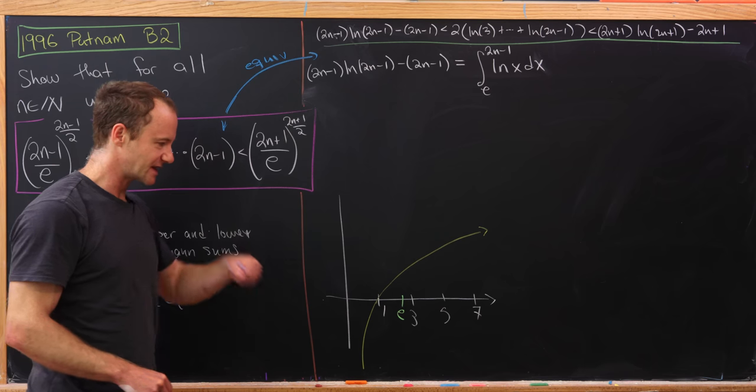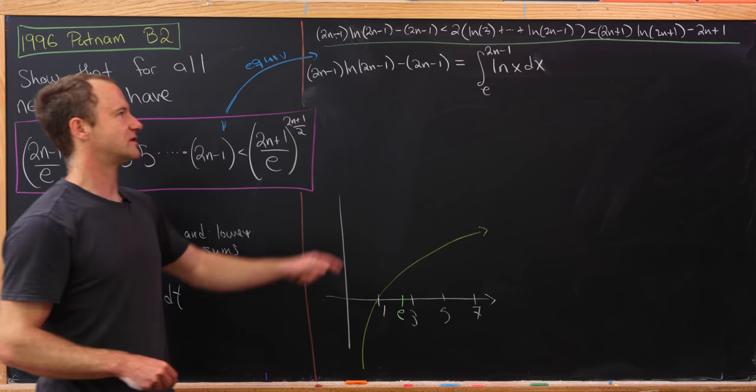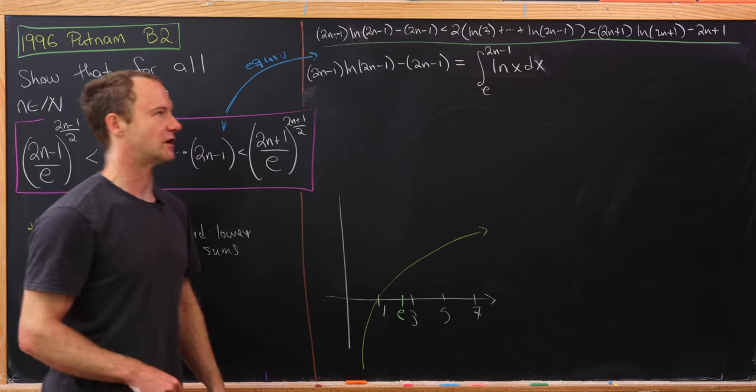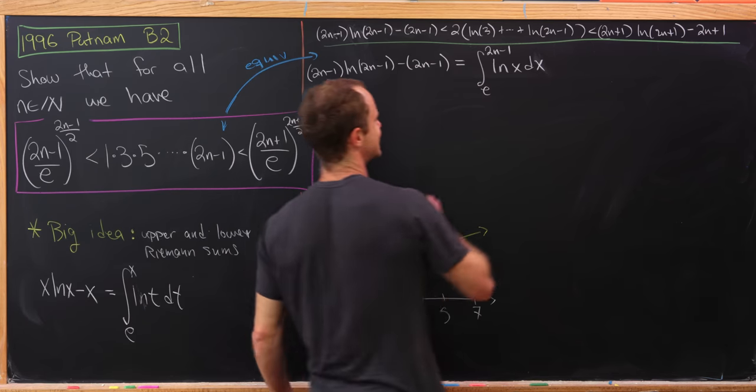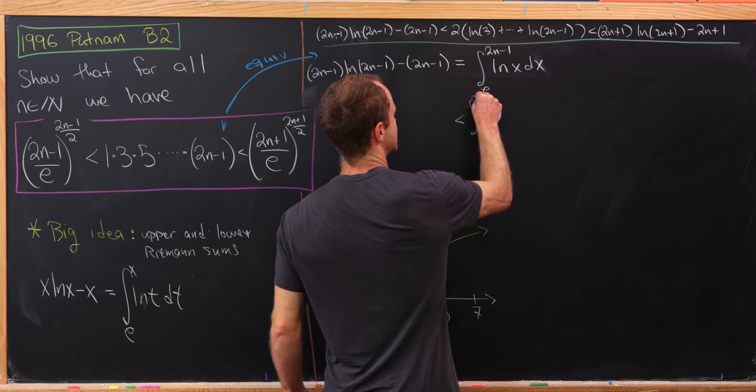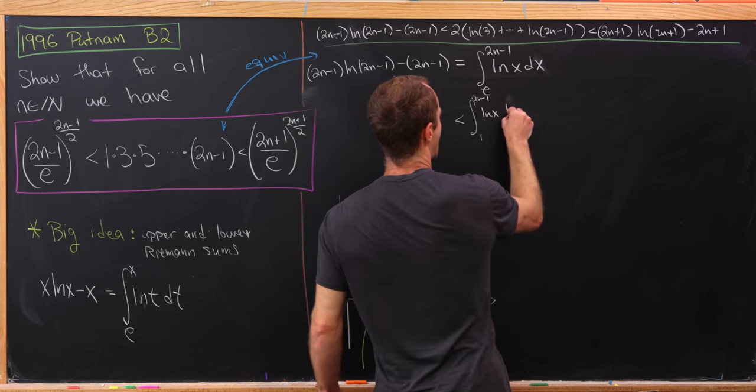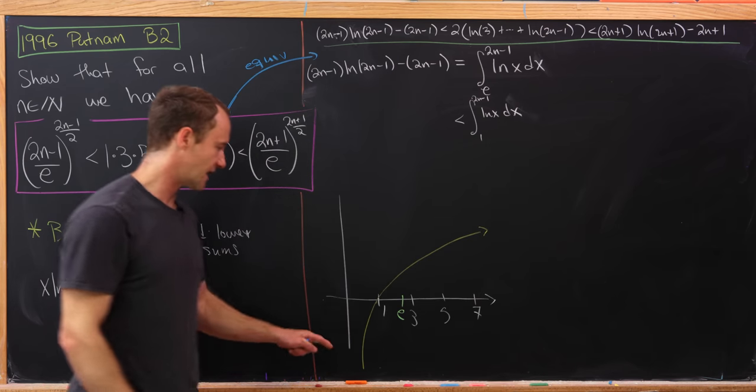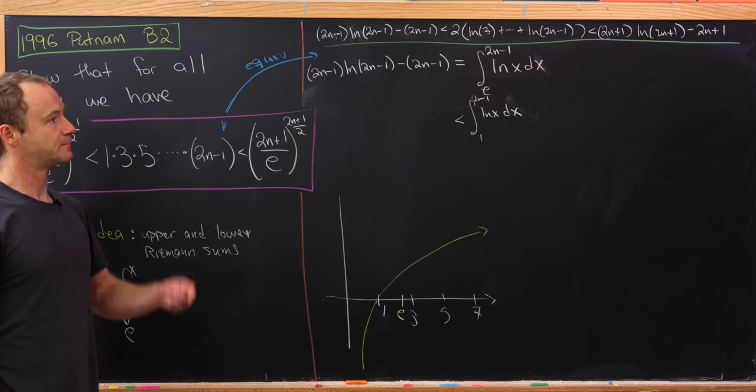So perhaps we would like to extend this back to start at 1, just because that's a natural number. And we're trying to get a sum that involves natural logs of natural numbers. Okay, so this thing is in turn less than the integral from 1 to 2n minus 1 of the natural log of x dx. And that only really works because natural log is positive between 1 and e.